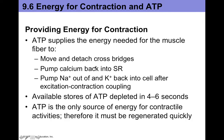We need ATP to move and detach the cross bridges of the myosin. ATP is required for myosin detachment as well as resetting the myosin heads back into their cocked position. ATP is also necessary for pumping calcium back into the sarcoplasmic reticulum, and is required to reestablish and maintain the concentration gradients of sodium and potassium across the cell so that action potentials can continue across the muscle cell.